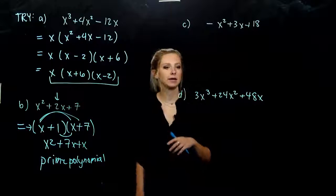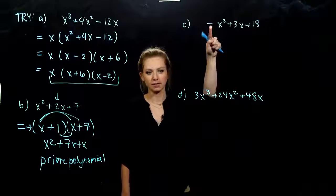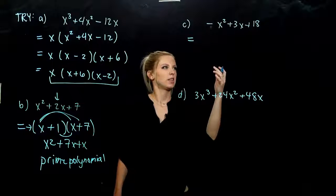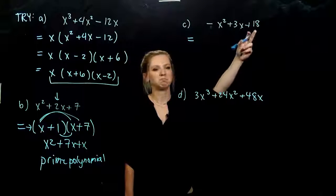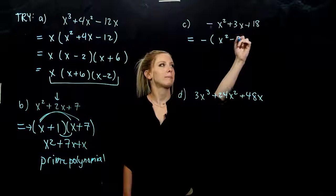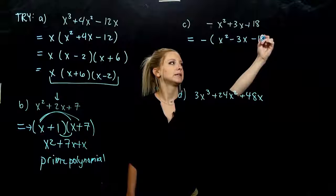For part C, again, we don't know how to deal with a negative out on the front yet. So we need to factor that out of everything. And is there anything else in common that we could take out? No. So if we take out the negative, now I've got x squared, minus 3x, minus 18.